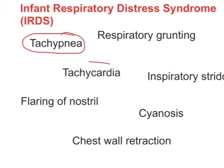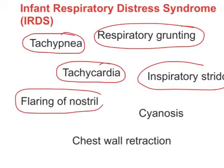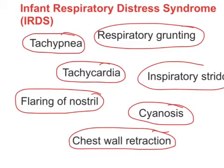The baby struggling to breathe leads to increased respiratory rate — tachypnea — and apnea. That can also lead to increased heart rate, causing tachycardia. Respiratory grunting can be seen, inspiratory stridor can be seen, and the baby struggling to breathe leads to flaring of the nostrils and chest wall retraction. Overall oxygenation is decreased, which can give rise to cyanosis.